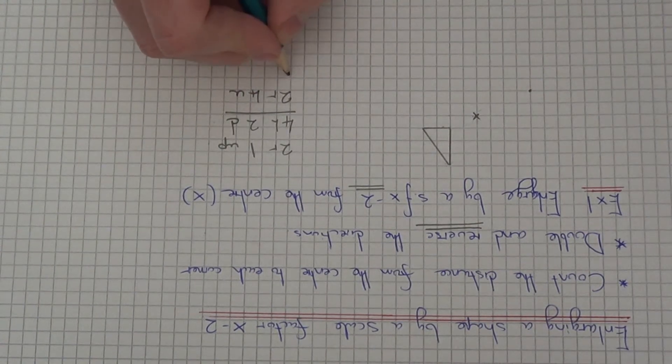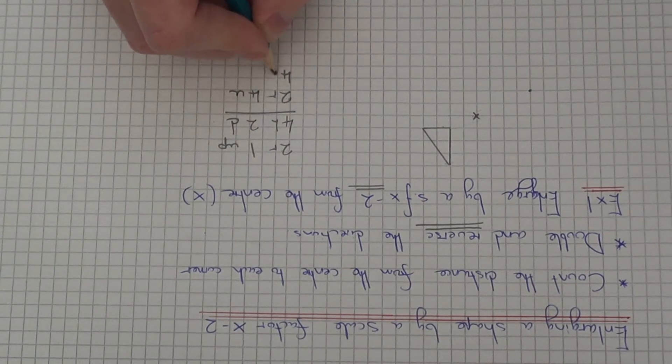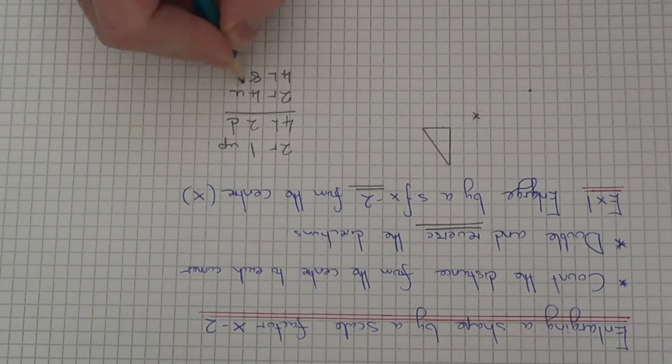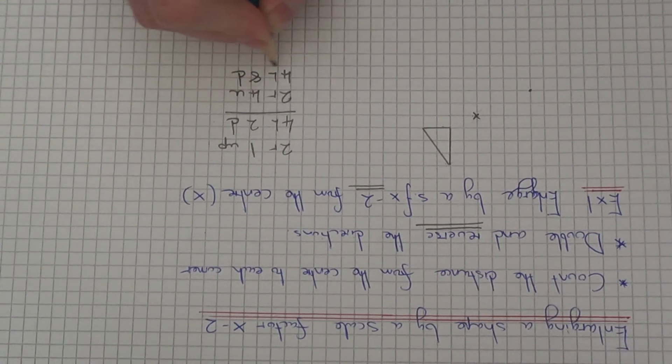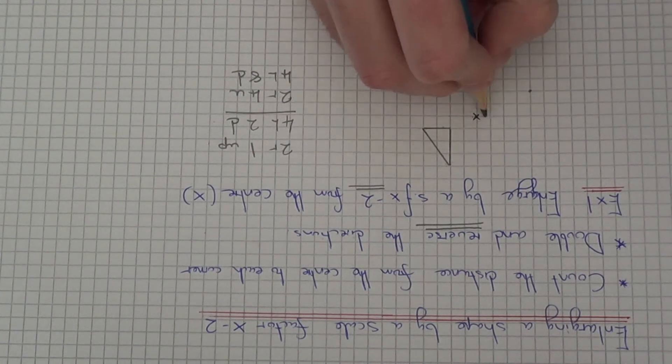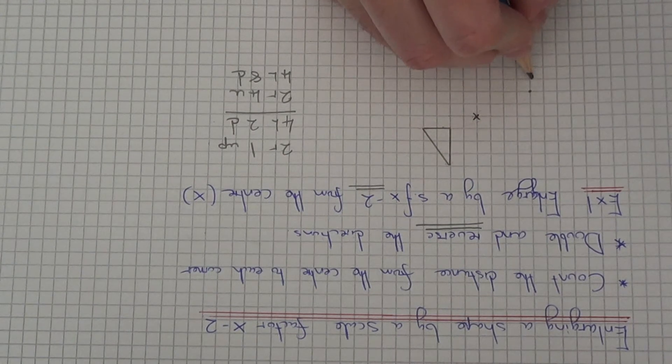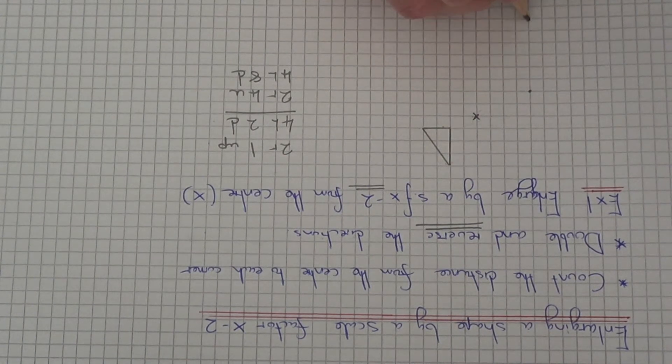So we're going to double these directions and reverse them. So right becomes left and up becomes down. So we've got to go 4 left and 8 down from the centre. So if we count this new corner out.